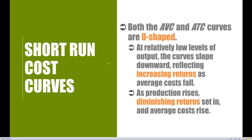For the AVC and ATC curves, at relatively low levels of output the cost curves slope downward because this reflects increasing returns. When we hired more laborers, we were in the region of increasing marginal returns where each additional worker hired gave us more output than the previous worker. Because they're being more efficient and productive, costs are lower. However, as we hire more and more workers, diminishing returns set in — each new worker brings less than the previous one, and costs start to rise.